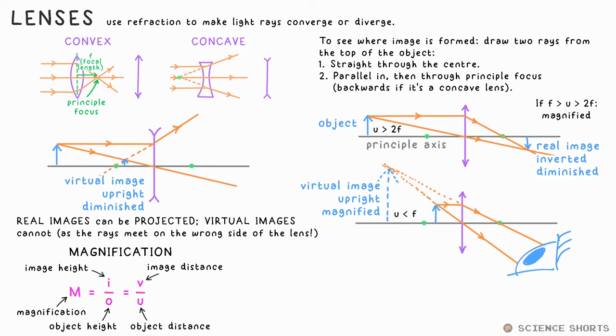A couple more equations for lenses. The power of a lens is just the reciprocal of focal length. We give it the unit diopter. For lenses, we should probably say thin lenses used together, total power is equal to the sum of individual powers. The full lens equation is this: 1 over F equals 1 over U plus 1 over V.